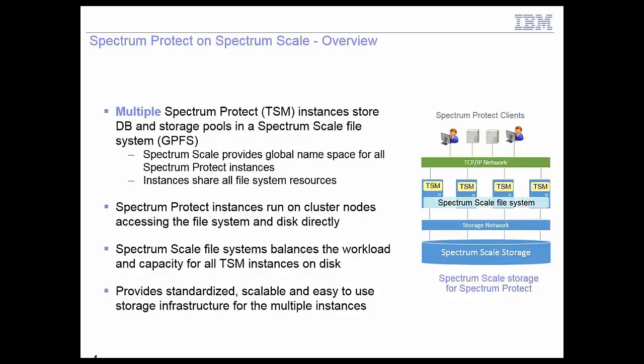The context of this solution is that we have multiple Spectrum Protect instances storing data in our database and storage pools in the Spectrum Scale file system. We have multiple TSM instances running on Spectrum Scale nodes using the Spectrum Scale file system for database, storage pools, and logs. All instances share all file system resources. The Spectrum Scale file system provides a global namespace and balanced workload and capacity for all TSM instances — if one instance needs more it can get more, if another needs less. This provides a standards-based, scalable, and easy-to-use storage infrastructure for multiple instances.